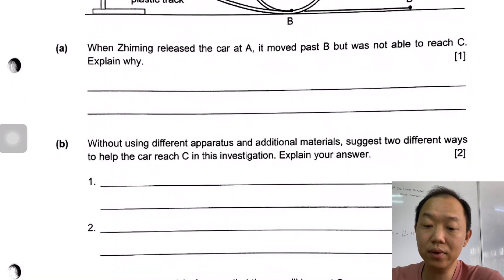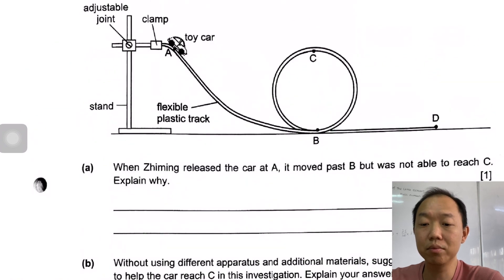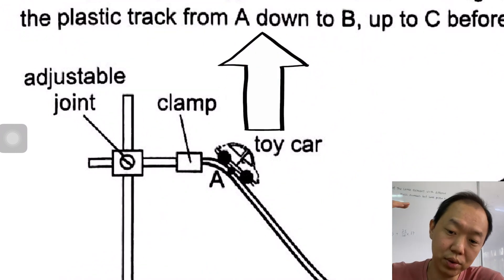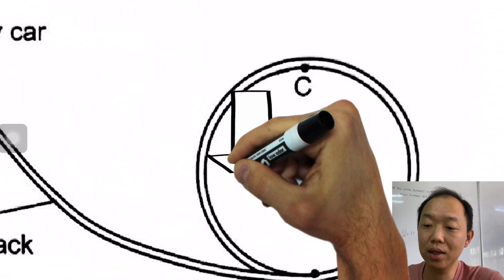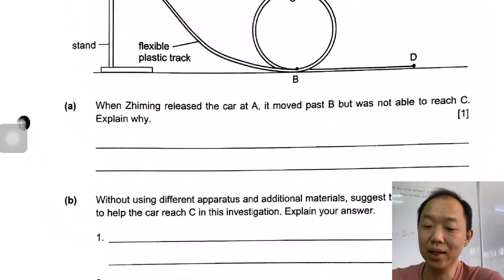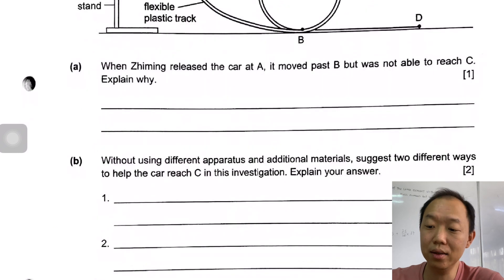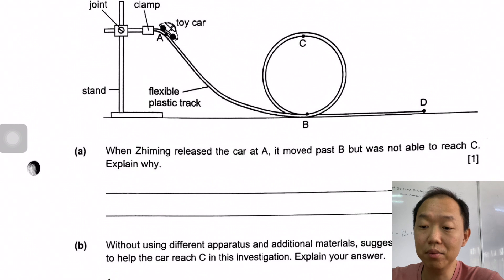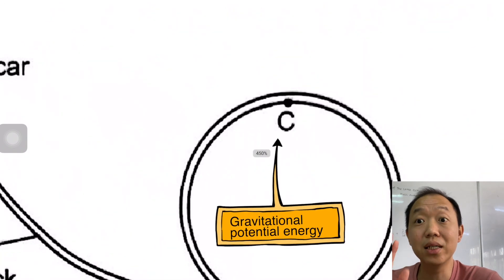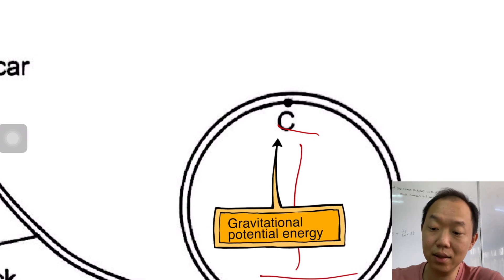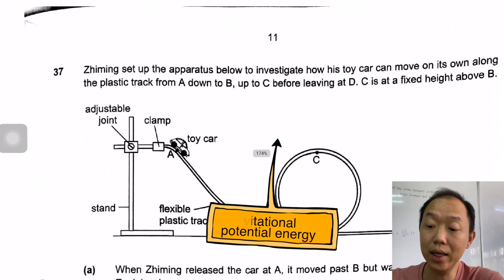Without using different apparatus and additional materials, suggest two ways to help the car reach C. Number one: it can be higher - give it more gravitational potential energy, put it higher. Or make this one lower. State the main form of energy that car will have at C. The main form of energy here would be gravitational potential energy. Why? Because it is high up above the ground.